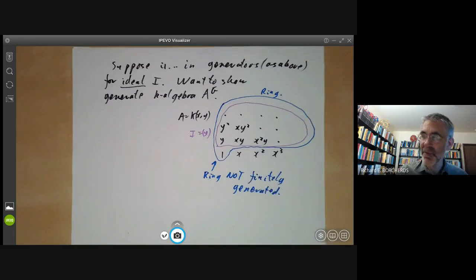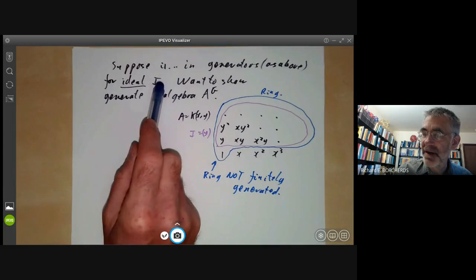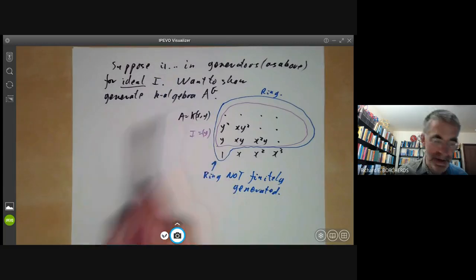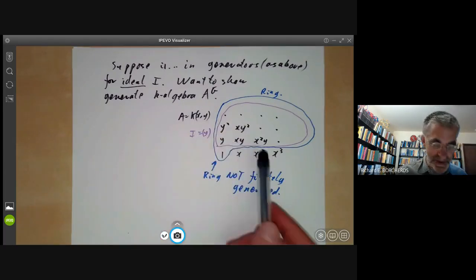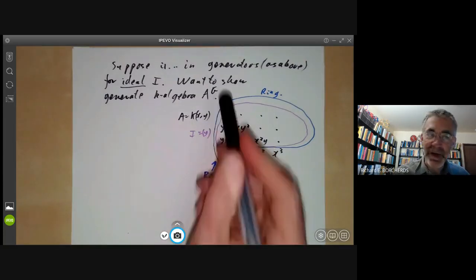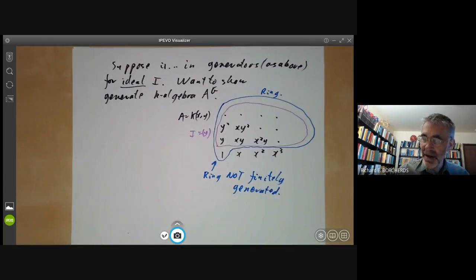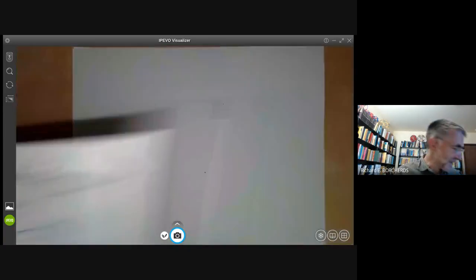So even though the ideal I is finitely generated as an ideal, the ring it generates is not finitely generated as a ring or an algebra. And this is a bit of a problem because we've got a finite set of generators for an ideal, and we want to show the corresponding ring is finitely generated. As we've just seen, this isn't true for most subrings. So there must be some special property of the ring of invariants that we have to use. And the special property of the ring of invariants